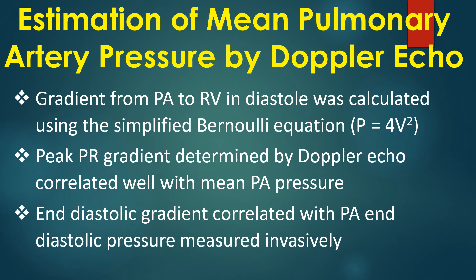The gradient from pulmonary artery to right ventricle in diastole was calculated using the simplified Bernoulli equation: P equals 4V squared. Peak PR gradient determined by Doppler echocardiography correlated well with mean pulmonary artery pressure. End-diastolic gradient correlated with pulmonary artery end-diastolic pressure measured invasively.